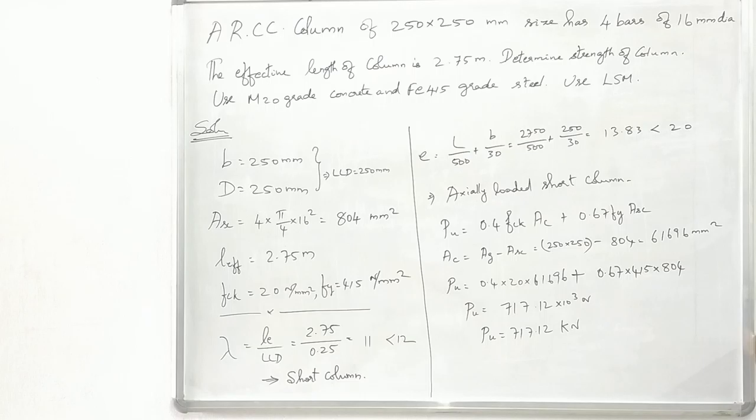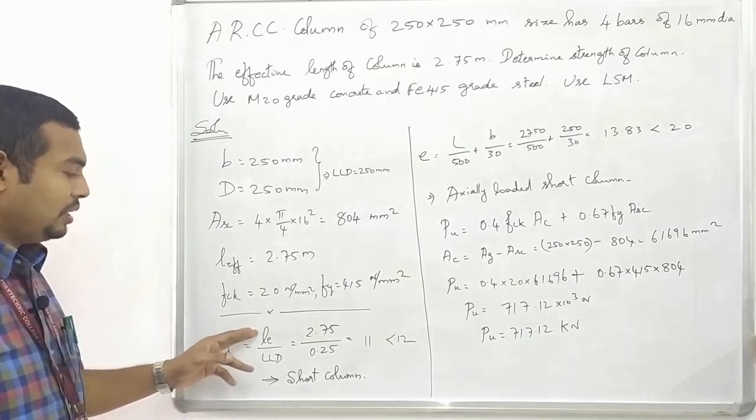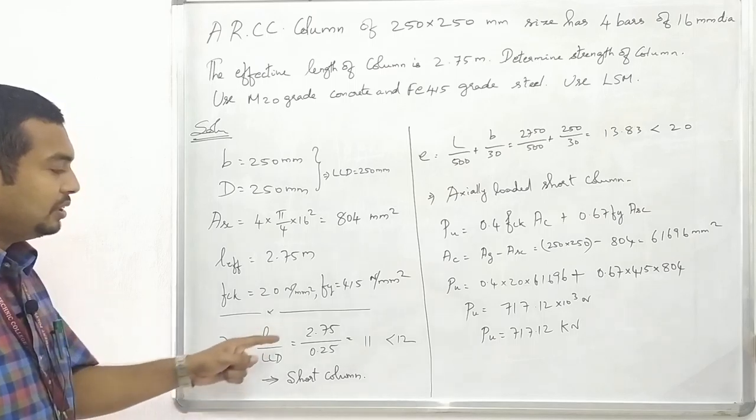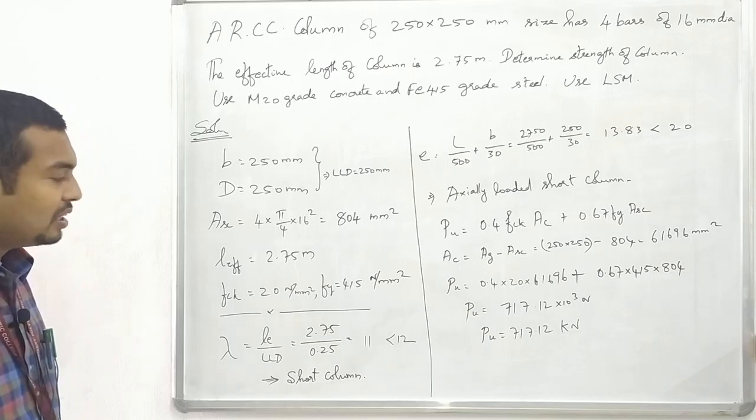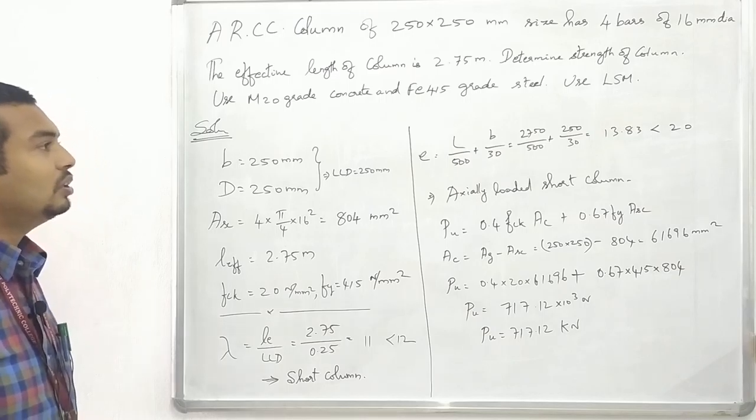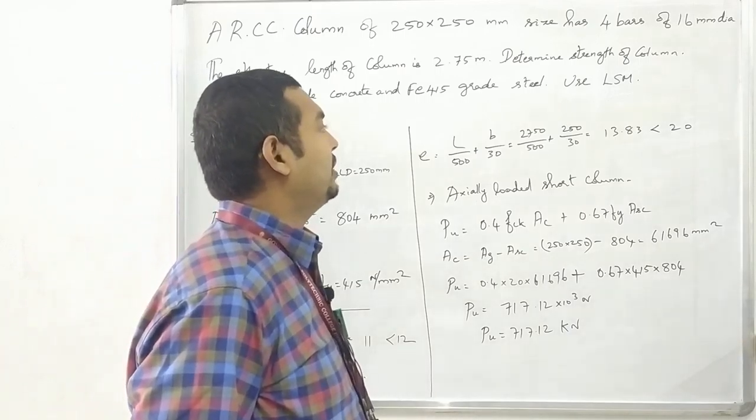If effective length is not given directly, follow Euler theory recommendations. fck = 20 N/mm², fy = 415 N/mm². First, we need to determine the slenderness ratio to identify if it's a short column or long column.